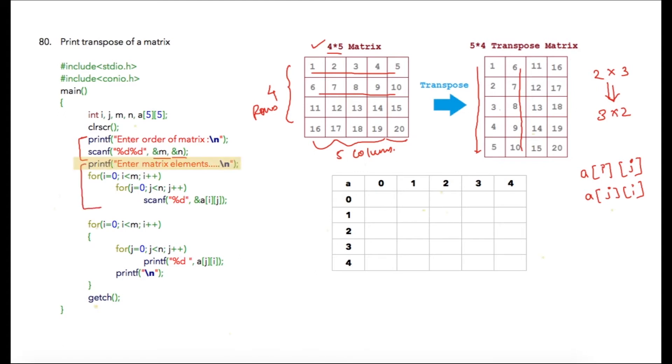If user has entered 2 and 3 as values of m and n, then total 6 array elements will be entered by the user with the help of this code block, and it will be stored at the address location of a[i][j] respectively. Once the user has entered all the matrix elements, we are going to simply print it.